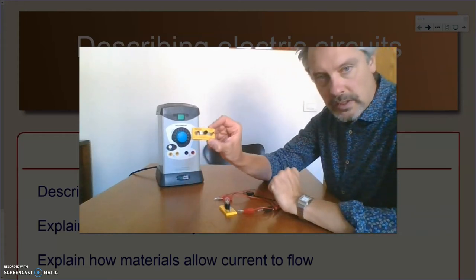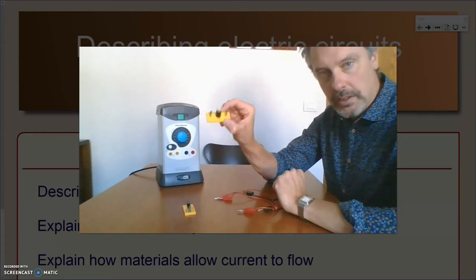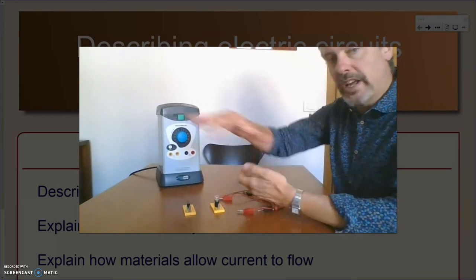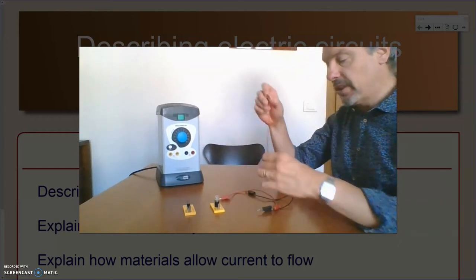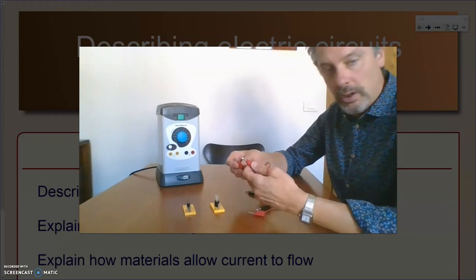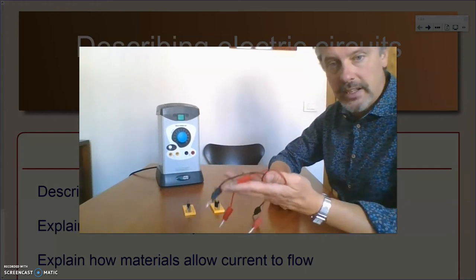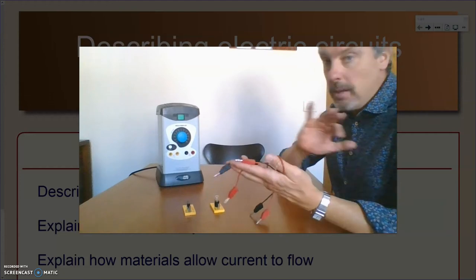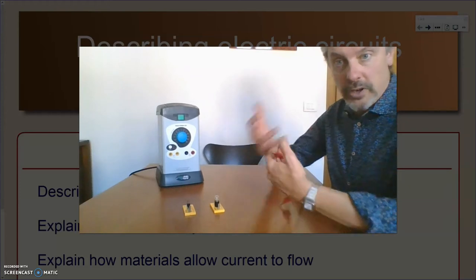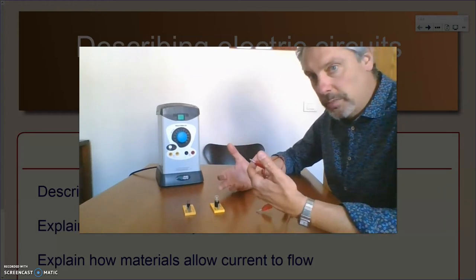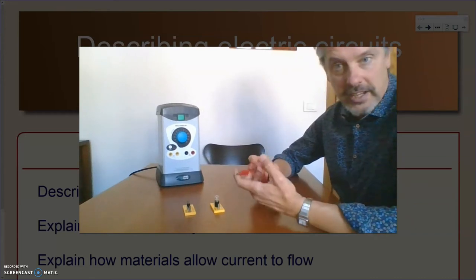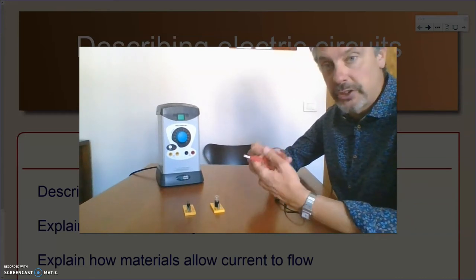Then we have a switch, then we have a light bulb or lamp, and now we need to connect these three components together by using wires. A quick note on color coding: as you can see I have black and red wires. Makes no difference. The color coding is useful when you have a complex circuit to build and you don't want to get confused, but they work exactly the same way. They're perfectly interchangeable.